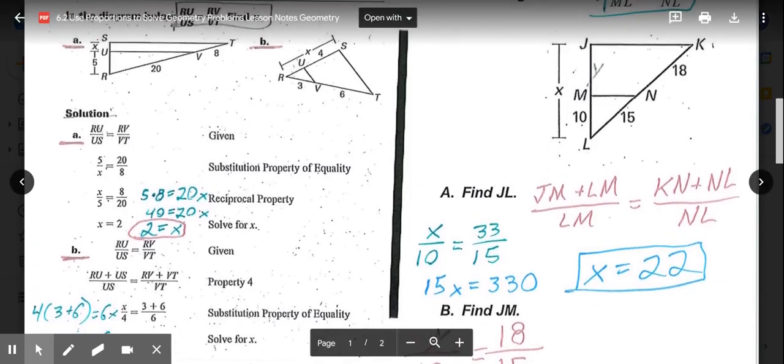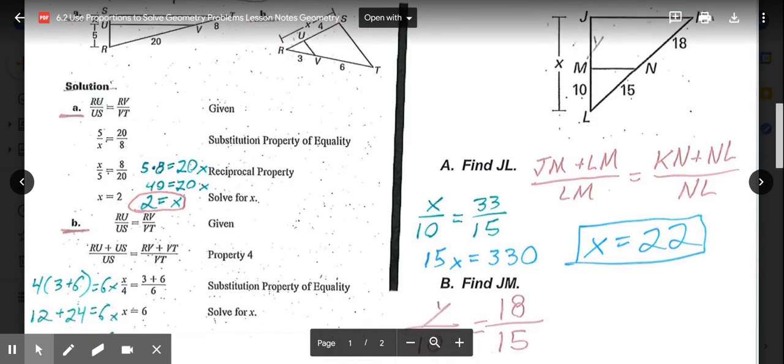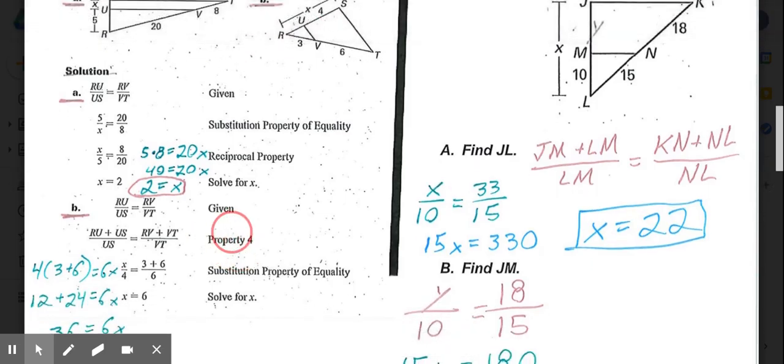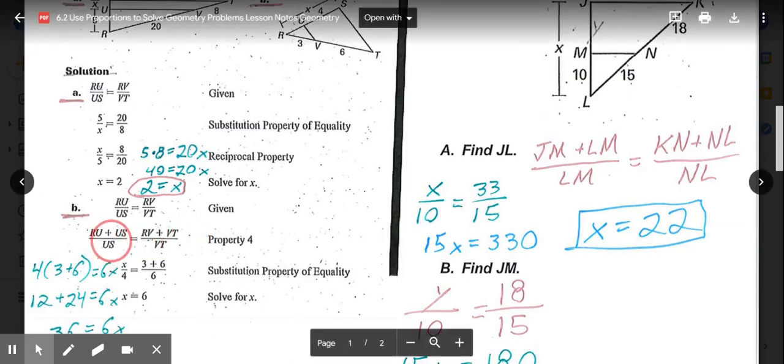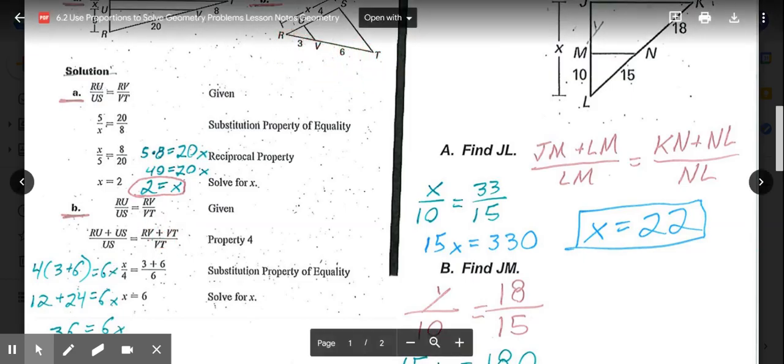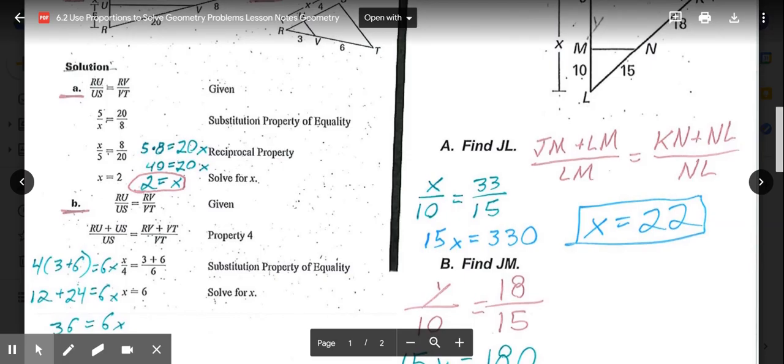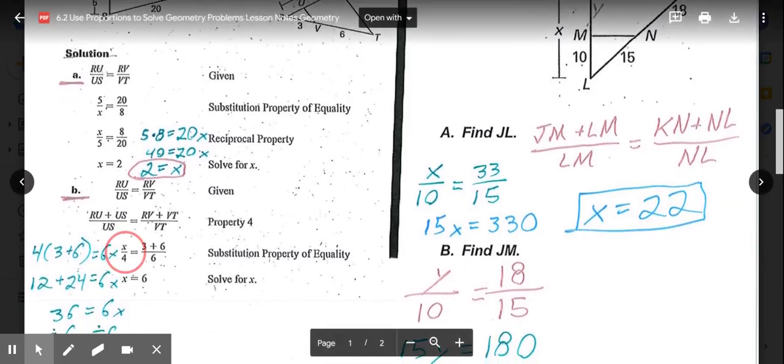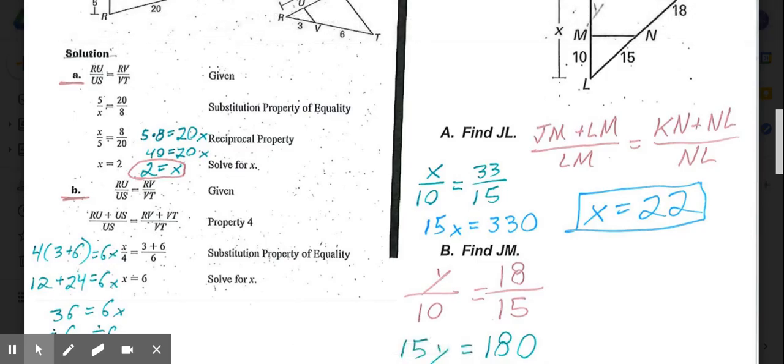We're using property 4 to do this setup. So (RU + US)/US = (RV + VT)/VT. So this whole segment right there. What that would become when we substitute is X/4 = (3 + 6)/6.